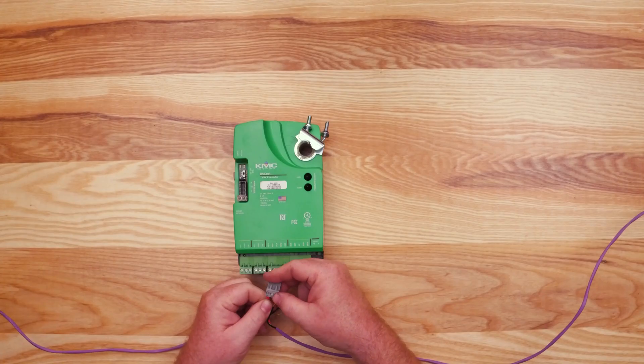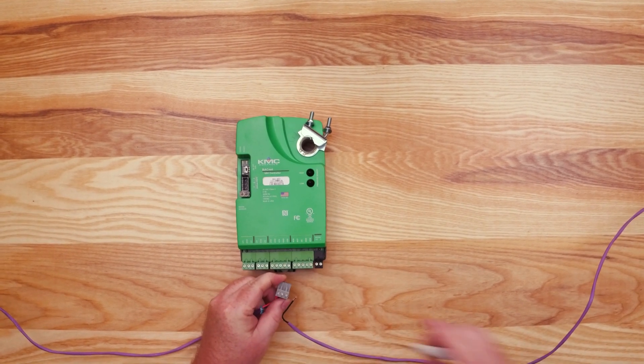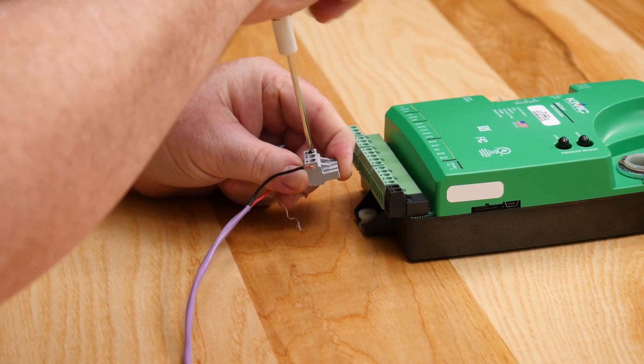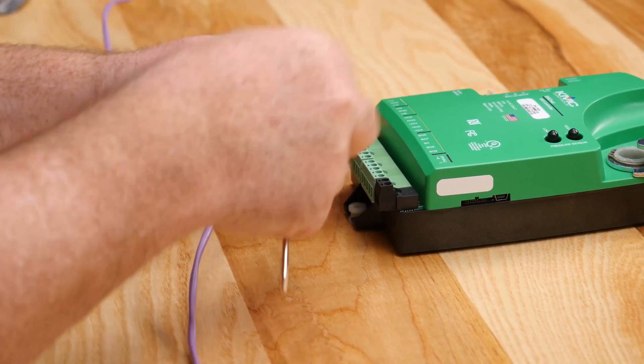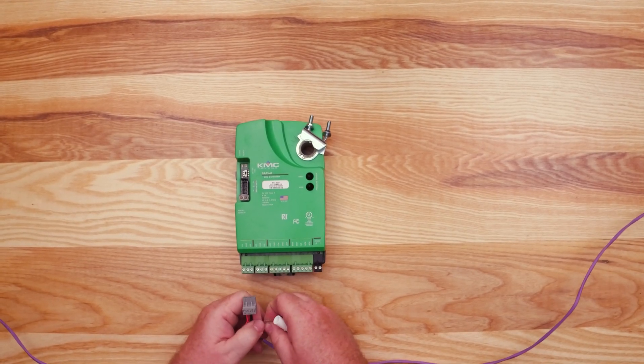Assuming this controller is in the middle of the network, start by connecting the negative A wires in parallel with all other negative A wires on the network. Likewise, connect the positive B wires in parallel with other positive B wires on the network. Connect the shields of the cables together in each device.